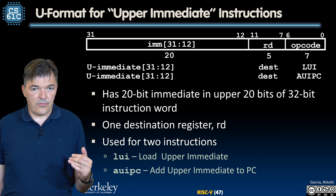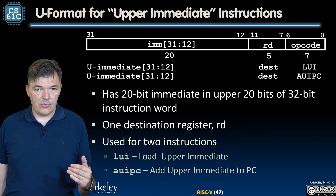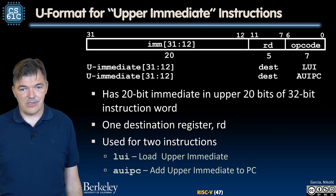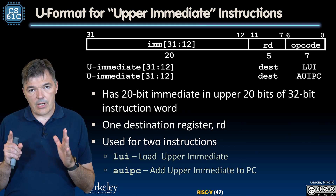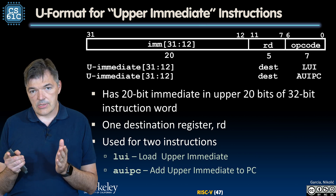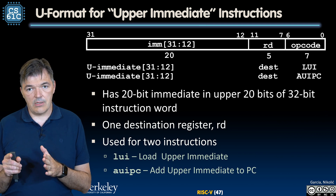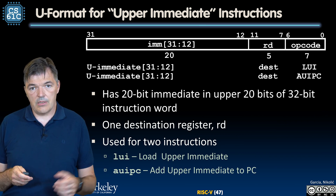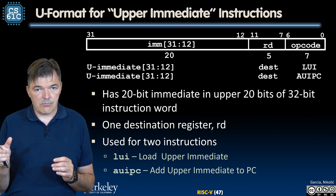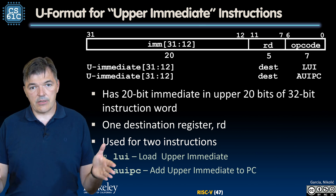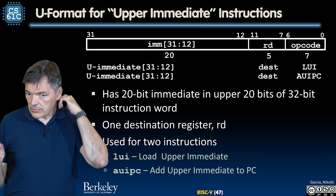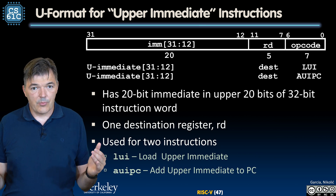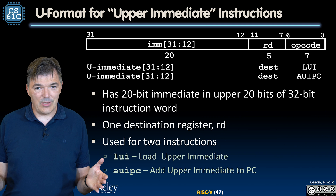There is a format that helps support long immediates: the U-format, which stands for upper immediate instructions — some people say unusually long immediates. Our immediates were limited to 12 bits in the I-format, also in branches and stores, achieved by reusing a register field and the funct7 field. Now 12 bits is good, but if we want to load an entire 32-bit value into a register, we are missing 20 bits. The U-format provides a way to get those missing 20 bits into our register.